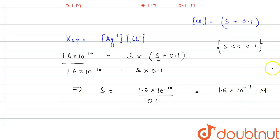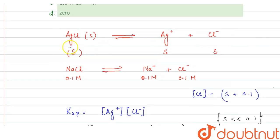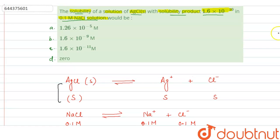So the solubility of AgCl is s = 1.6 × 10⁻⁹ moles per liter, and this is given in Option B. So Option B is the answer.